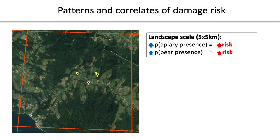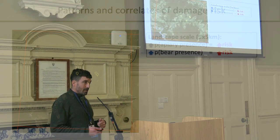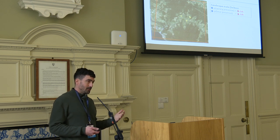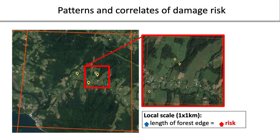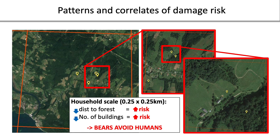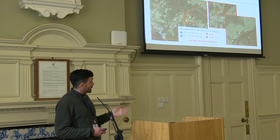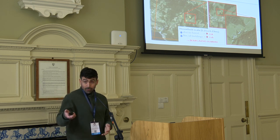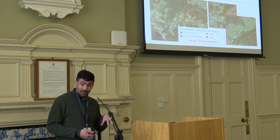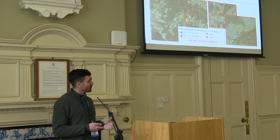At the landscape scale, we found that the probability of damage increases with the probability of apiaries and the probability of bear presence, related to agricultural cover and forest cover respectively. At the local scale, risk increased with the length of forest edge. At the household scale, apiaries located in more remote areas — close to forest with no buildings around — had a higher risk, which tells us that bears avoid humans, similar to what was shown with elephants hiding in the forest after creating problems.